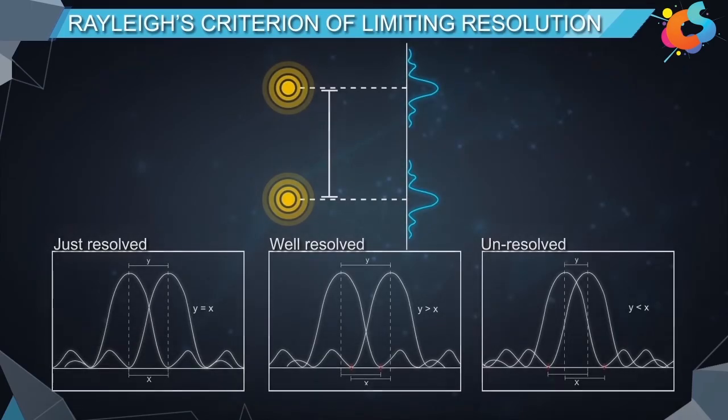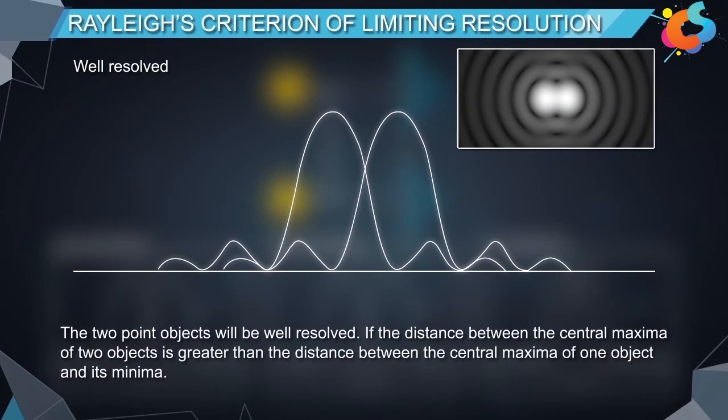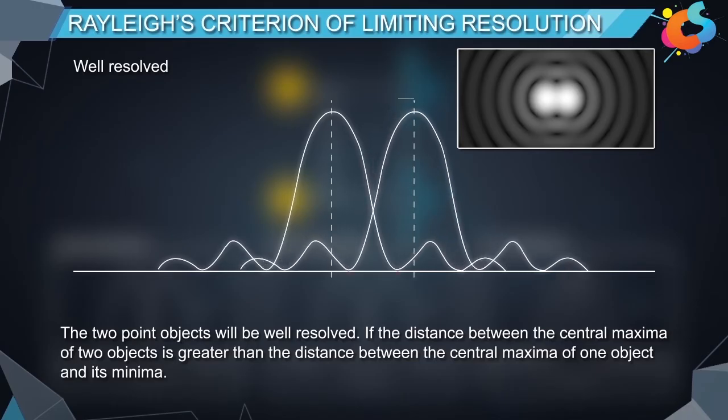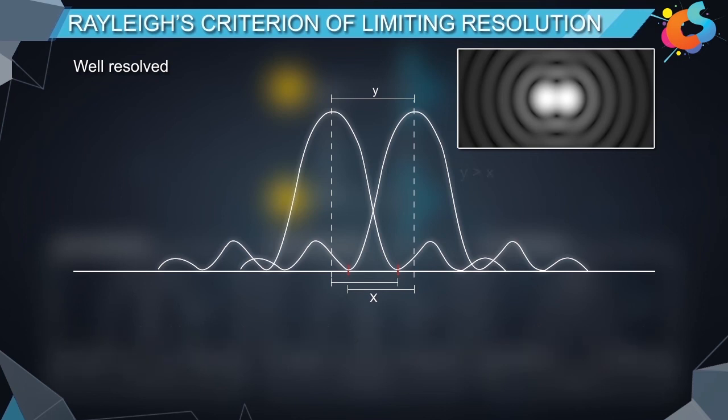Second criteria: two point objects will be well resolved if the distance between the central maxima of the two objects is greater than the distance between the central maxima of one object and its first minima. That is, if Y is greater than X, the objects are said to be well resolved.